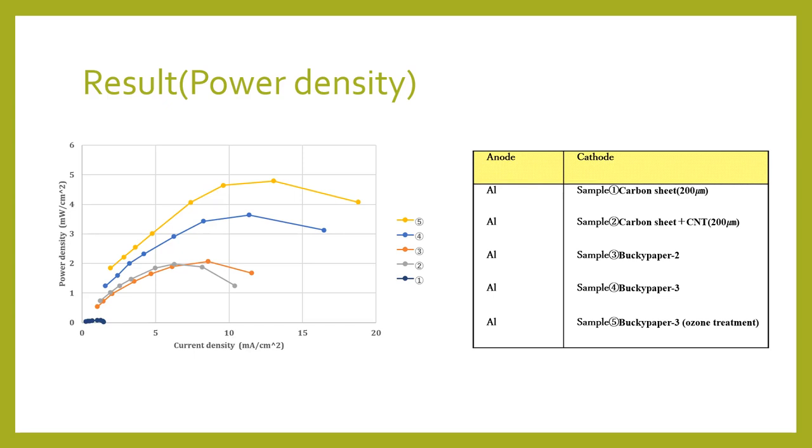In addition, it was found that the power density per volume of buckypaper was higher than that of carbon sheet, since buckypaper had half or less film thickness.